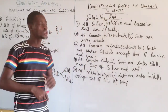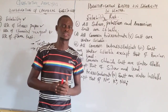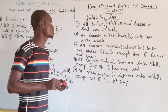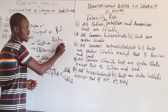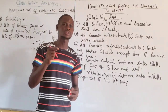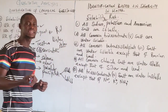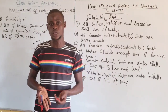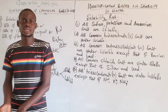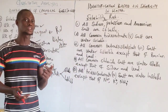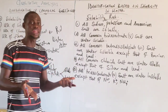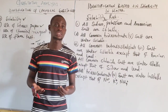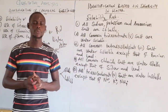In today's video I will be starting with identification based on solubility in water. Any substance that is soluble in water must be a polar substance. Water is a polar solvent, and a polar solvent can dissolve a polar substance. That is the rule of solubility — a polar substance will dissolve in a polar solvent.